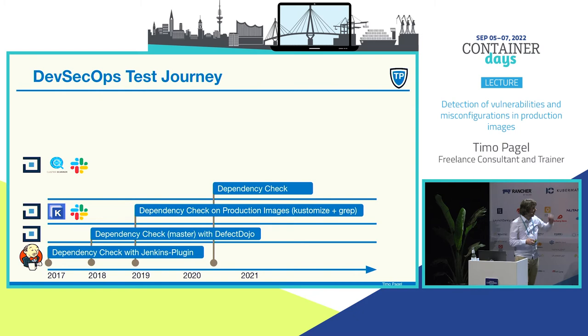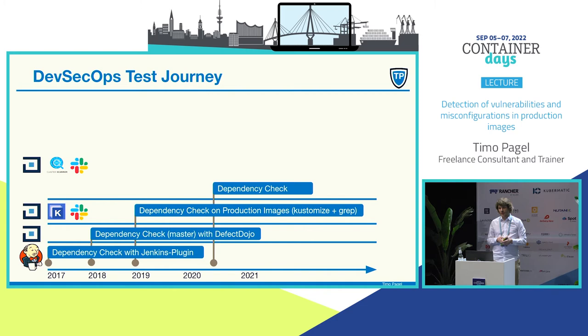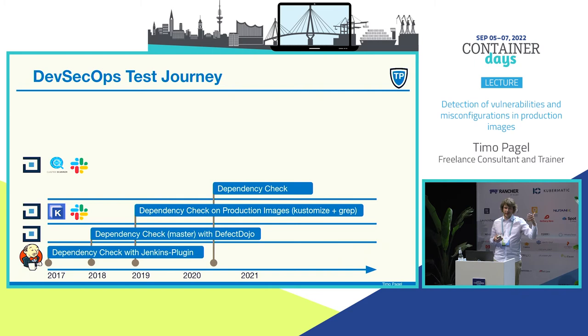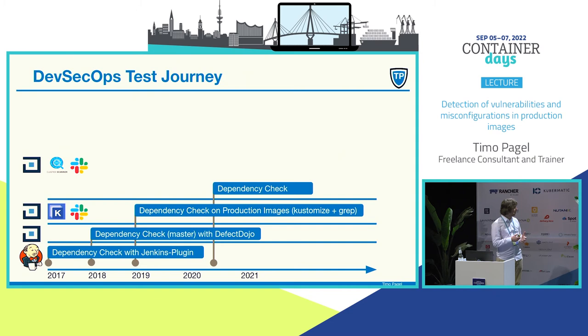That is where we come to the product Cluster Image Scanner, where I actually scan the images which are in production. I have a collector in multiple Kubernetes clusters — I collect what is actually deployed and then use Dependency Check to scan these images. Mainly I'm using Java JAR applications. Dependency Check can take a look at the JARs, open them and see which library in which version is used. Then it can detect the known vulnerabilities inside, and we use the process with DefectDojo and Slack to notify the developers. That was a big step for me — I really had the real insight of what is in production.